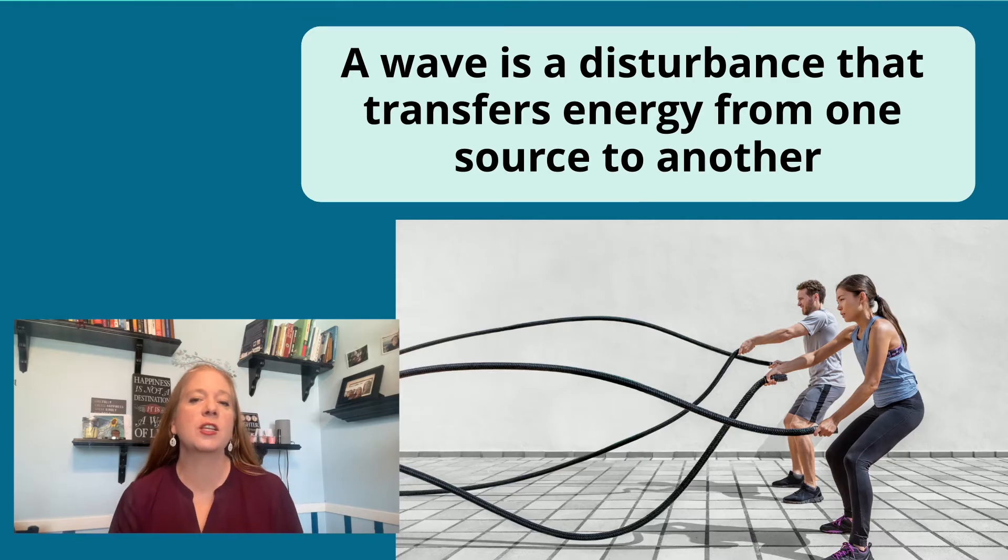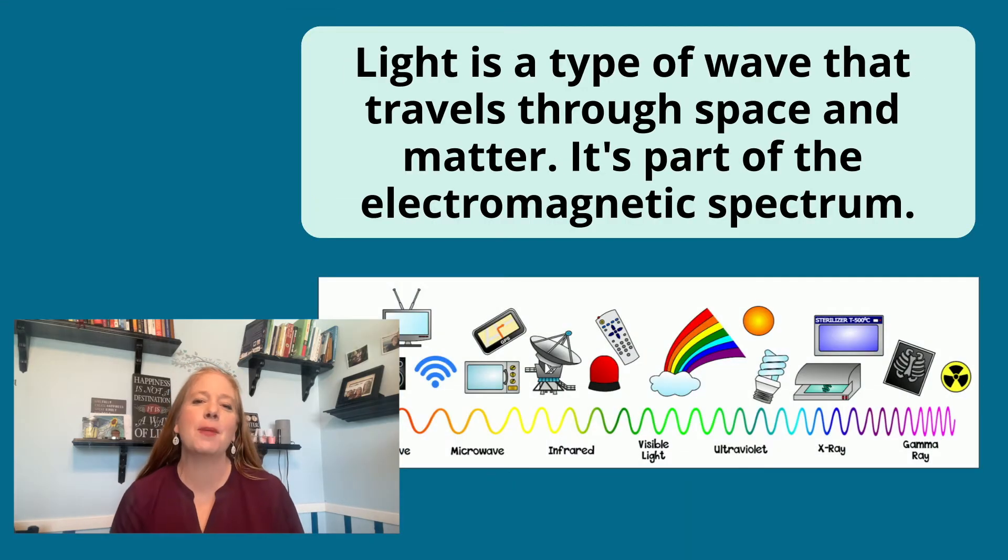A wave is a disturbance that transfers energy from one source to another. Light is a type of wave that travels through space and matter. It's part of the electromagnetic spectrum.